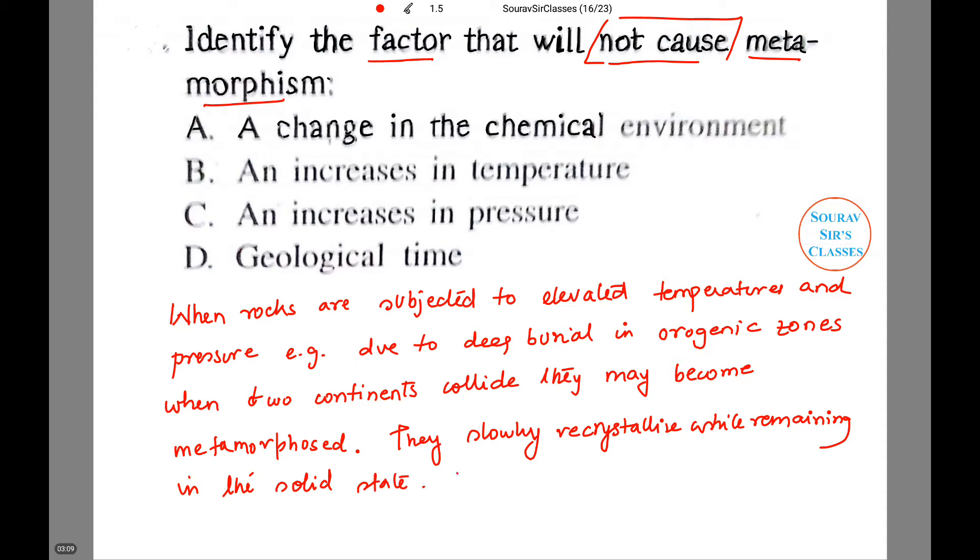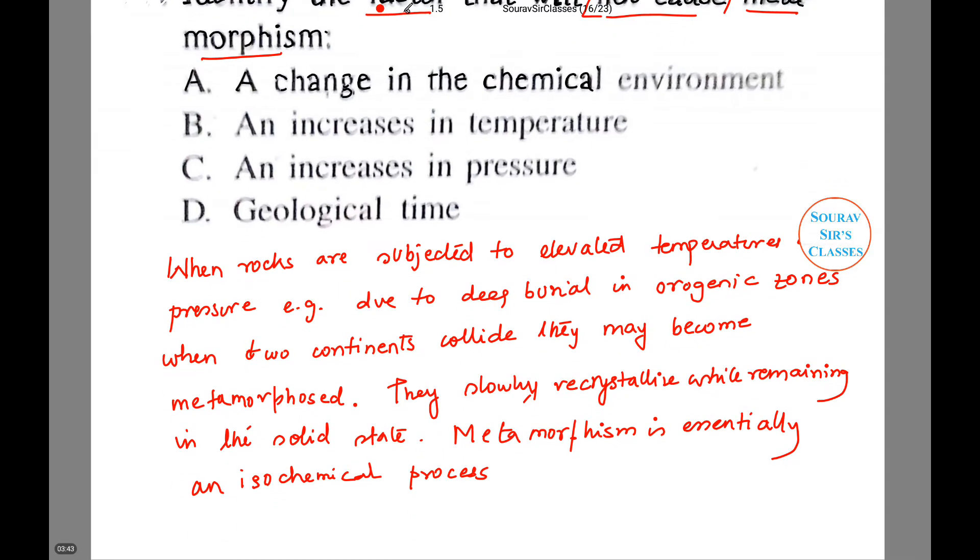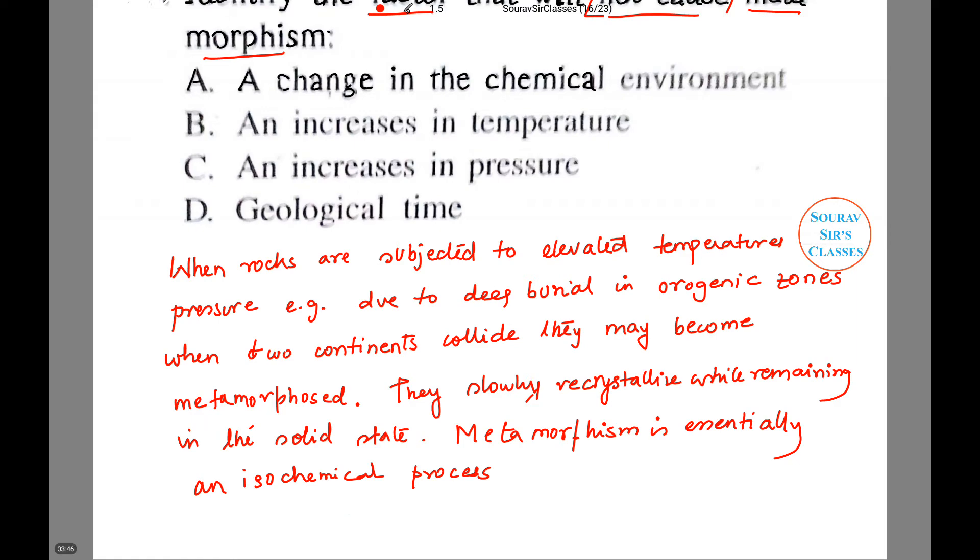So what we can see is metamorphism is essentially an isochemical process. That is, bulk chemical composition of a rock body is more or less unchanged from protolith or original rock...